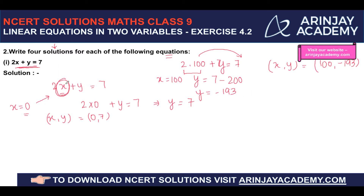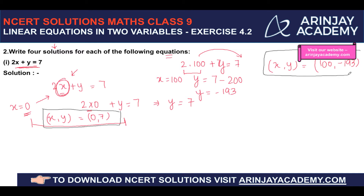The reason I said you can choose any value — but you should choose values that are easy to solve. When I chose x as 0, there's no complex multiplication. In all cases, we try to choose values of x or y such that computation becomes easier. Whenever you need more than one solution, we tend to choose x or y equal to 0.